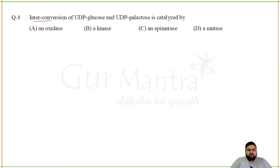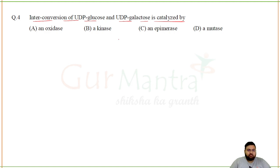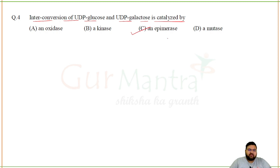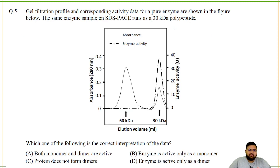Interconversion of UDP-glucose to UDP-galactose is characterized by: glucose and galactose are epimers of each other. Epimers are compounds that differ at only one carbon. Epimers can be interconverted with the help of epimerase enzymes.